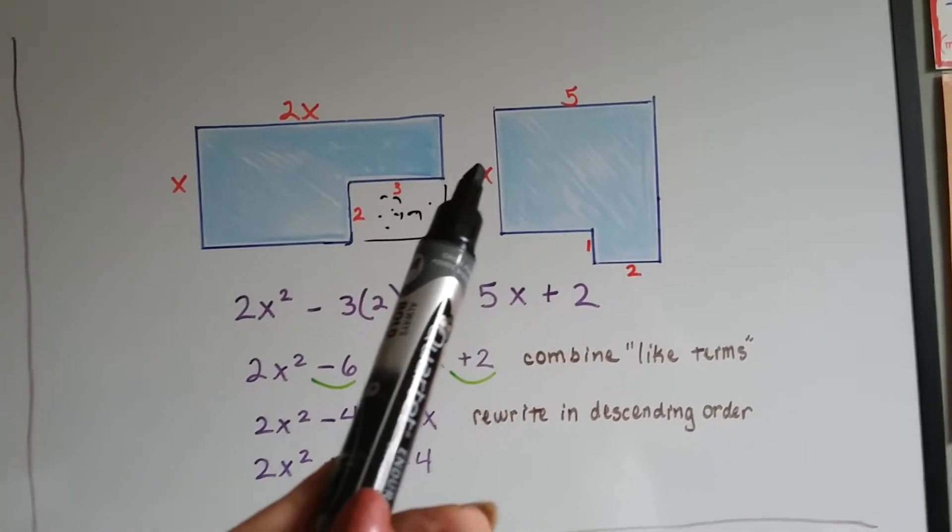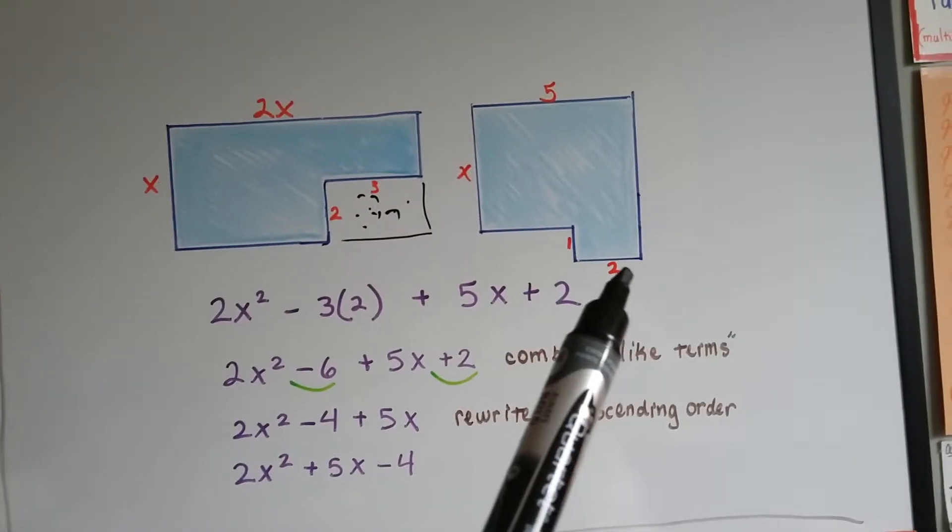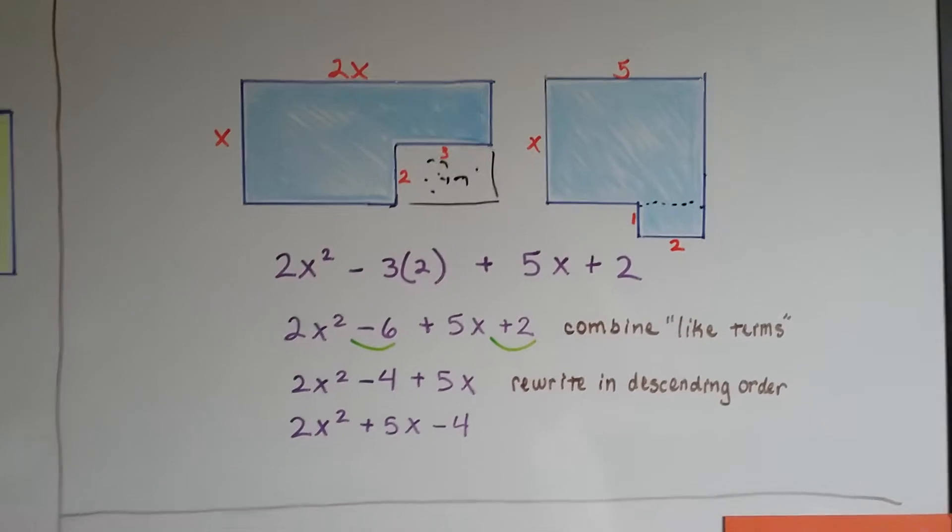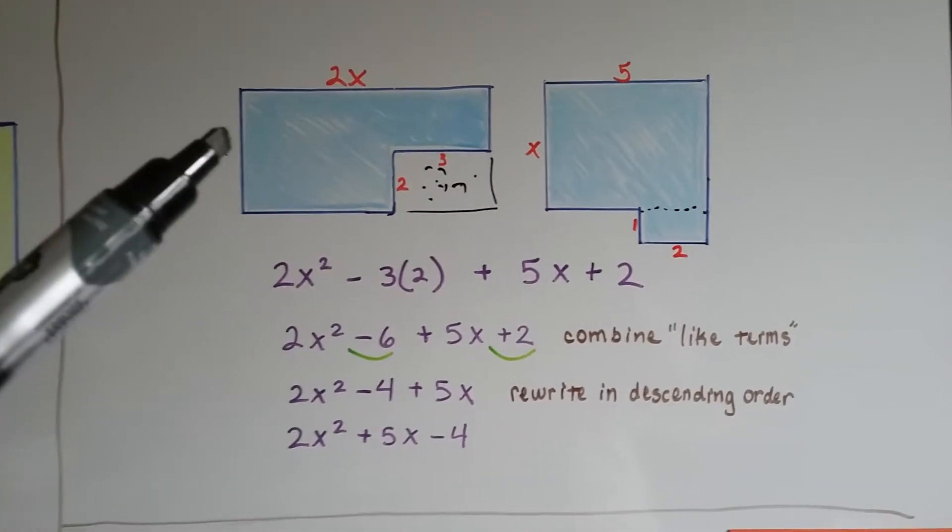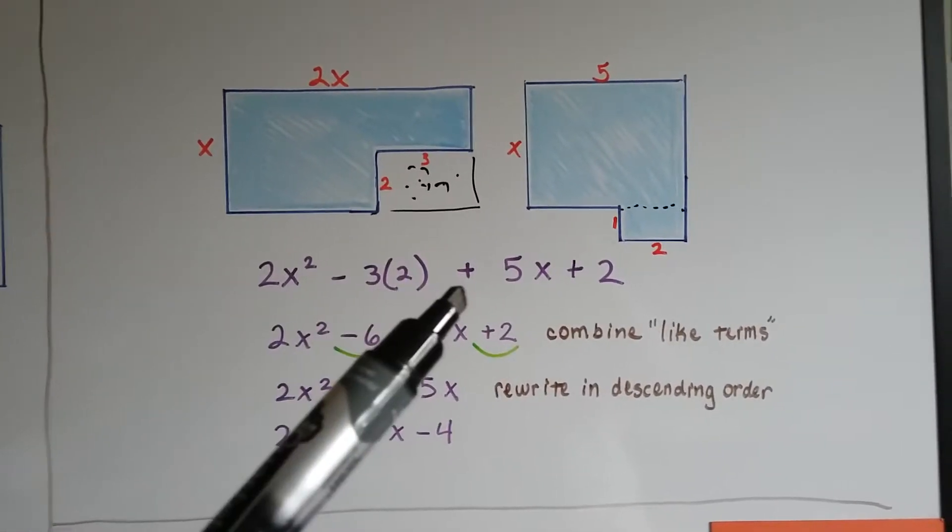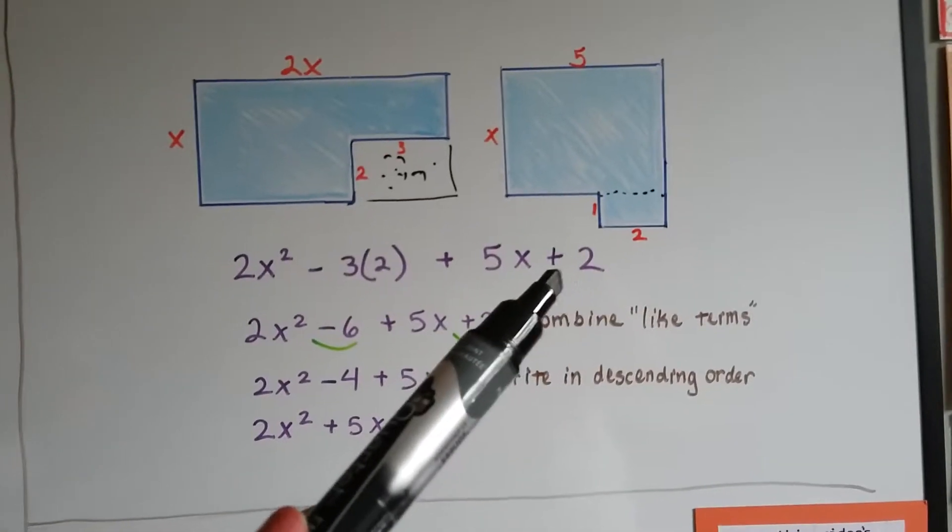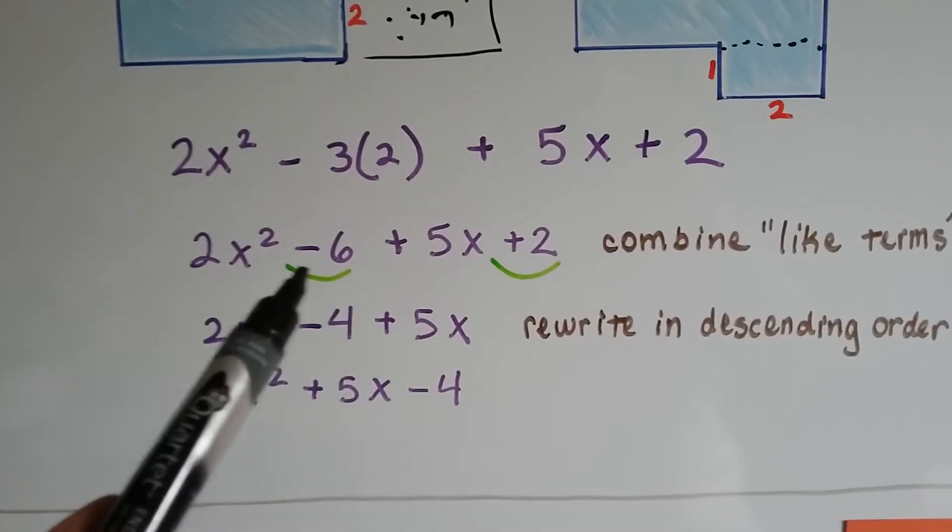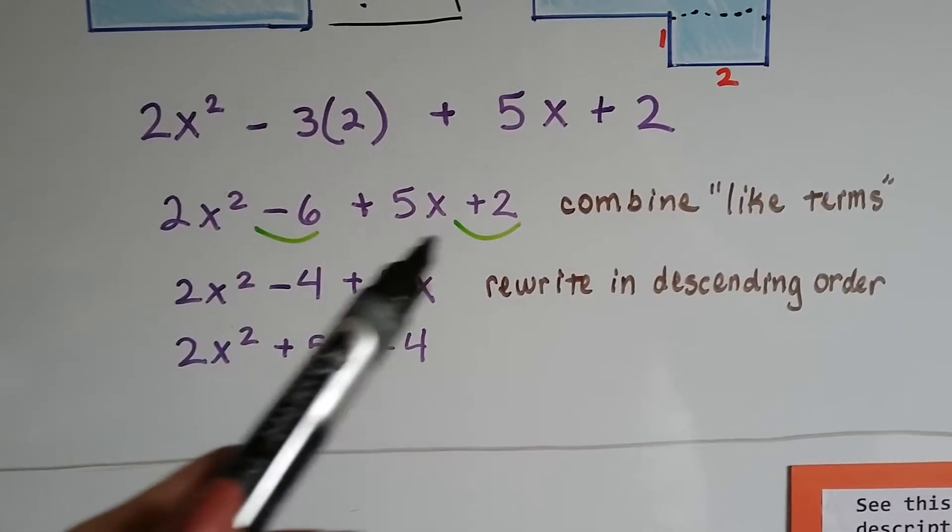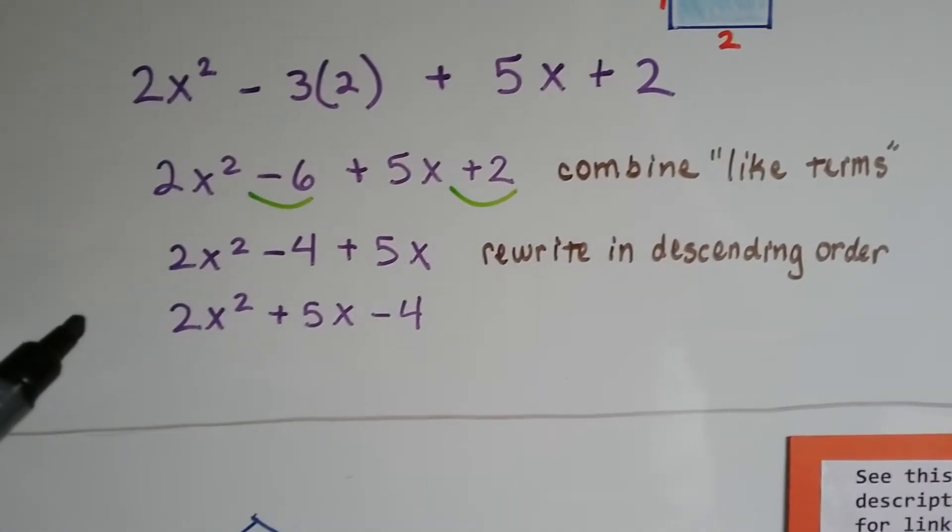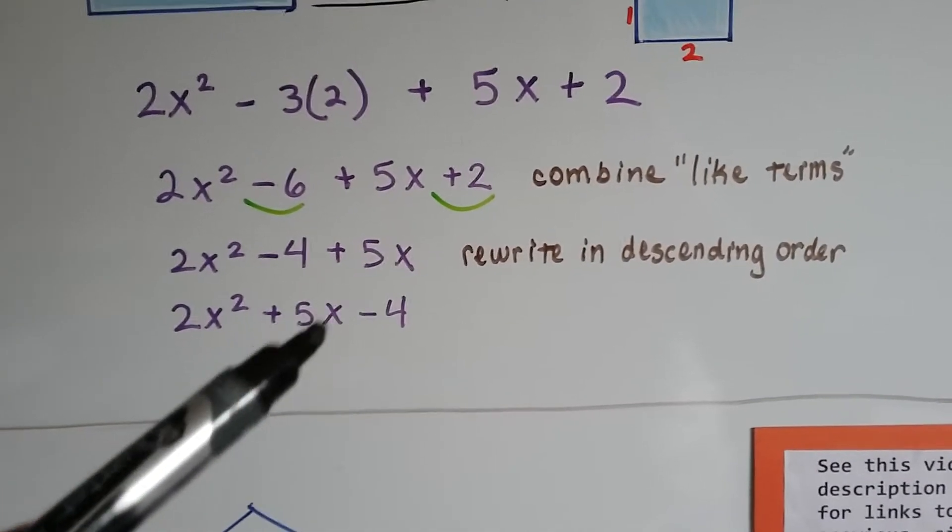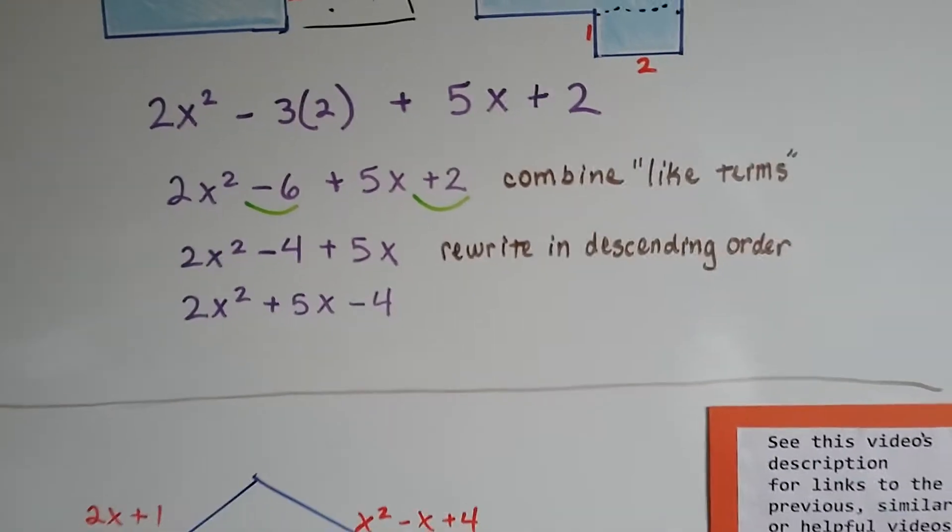And then this one is 5 by x, but it's got a little 1 side by 2 side added to it, so that's like added to it. Otherwise it would be 5 times x. So now we've got 2x squared, because there's an x here and an x here. And we're going to take away this 3 times 2, and then we're going to add this 5 times x and this 1 times 2, which is 2. We can combine the like terms. This minus 6 and plus 2 are like terms, they're just numbers. So negative 6 plus 2 is negative 4. Now we need to write it in descending order. Here we put the highest exponent for x first, then we put the x to the first power, and then we put the minus 4. And now we've rewritten it.